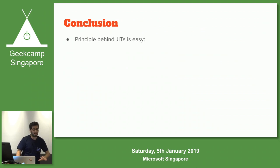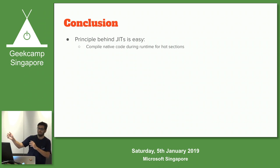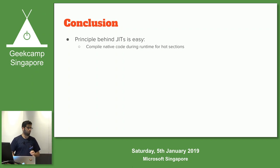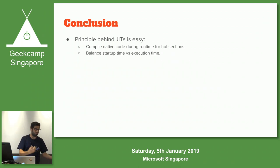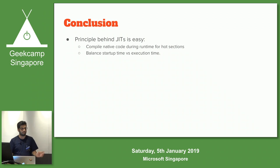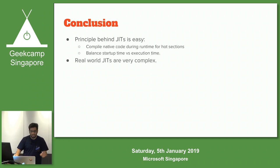So in conclusion - out of all that talk, the principle behind JIT is actually quite easy. Compile native code during runtime for hot sections - that's it. JVM does this, PyPy does this, all your JavaScript engines like V8 and JavaScript Core do this. The main thing you have to balance is execution time versus startup time. If you want startup time to be fast, you probably don't want JIT. If you want execution time to be fast and don't mind sacrificing startup time, you use JIT. Real world JITs are very, very complex.